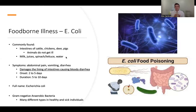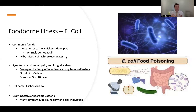E. coli and salmonella are probably the ones we hear about most often — contaminated spinach, contaminated milk, or meat products that get recalled because of over-contamination. E. coli can cause abdominal pain, vomiting, and diarrhea. Specifically, E. coli damages the lining of the intestines, causing bloody diarrhea — that's a very unique and important thing to remember. After eating something with an overabundance of E. coli, it takes about two to five days of incubation before symptoms start. Those symptoms could last about five to ten days.